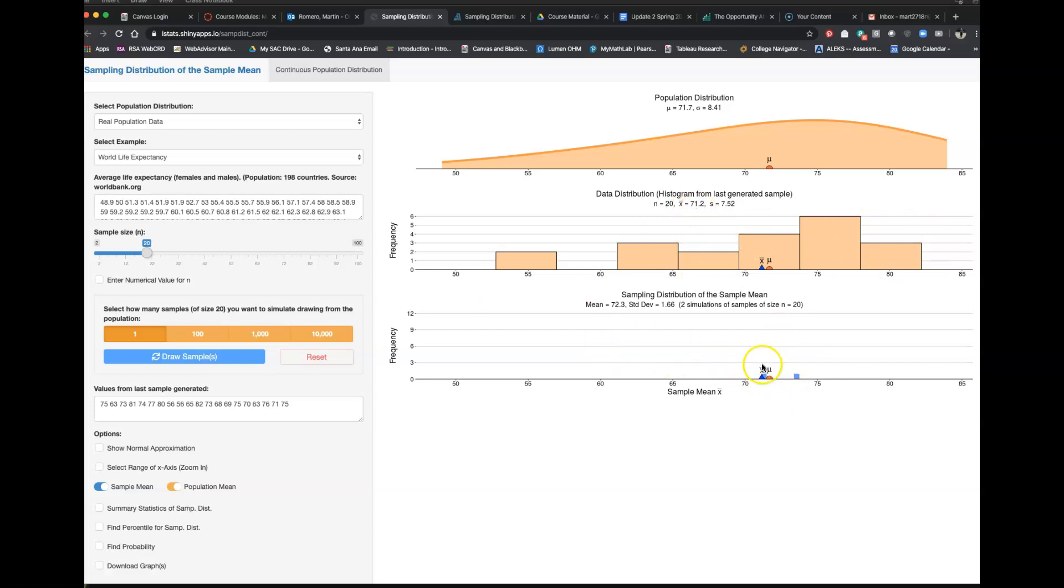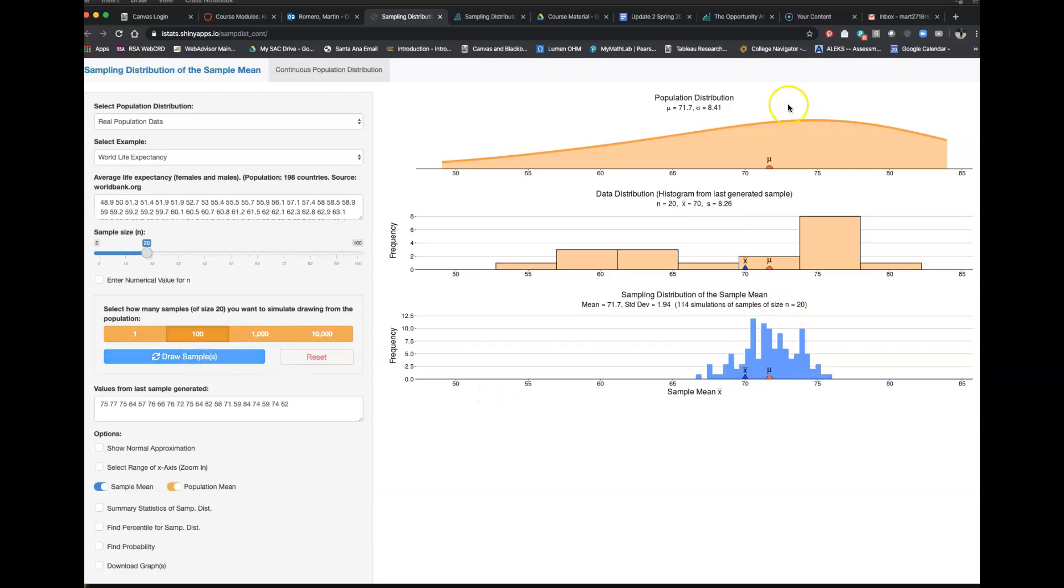Now, notice on the bottom, what we're starting to see is a sampling distribution. I am graphing all the possible X bars as I take one sample. And then I'm collecting, right, the mean for those samples. And then look at the distribution. Let's do that 100 times. And let's draw that. And so notice what happens here. Here's the population distribution. Here's the distribution for one sample. And here is the sampling distribution of the statistic or the X bar.